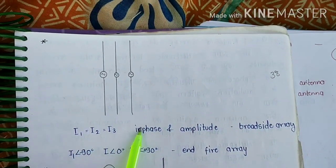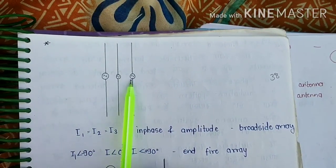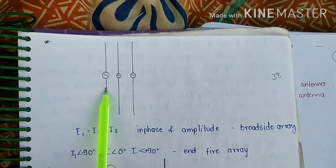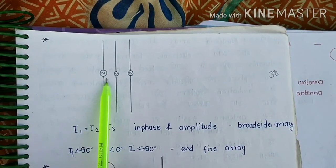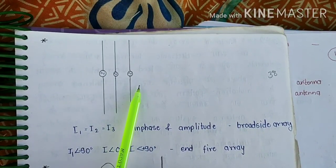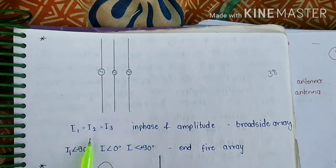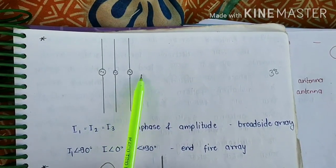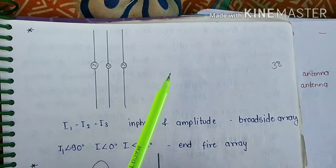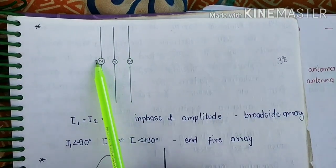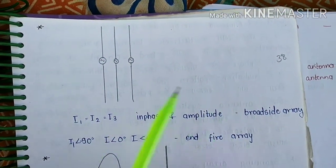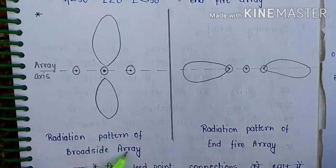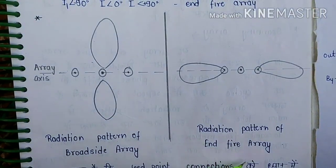If the three currents are equal in amplitude but have a progressive phase shift — for example, minus 90 degrees, zero degrees, and 90 degrees — meaning 90-degree progressive phase shift, then this type of array is called an end-fire array. There are two radiation patterns: the first is for broadside array and the second is for end-fire array.